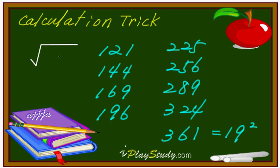Okay, quickly — I'm gonna ask you one question. What is the square root of 289? 289 — that's it. You remember this one already, right? Which is? 17. That's right, 17!